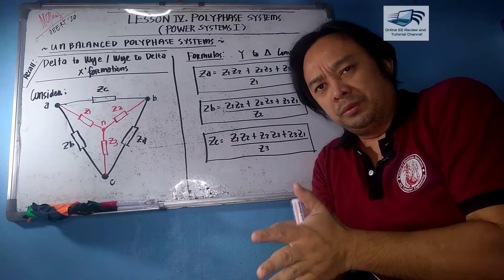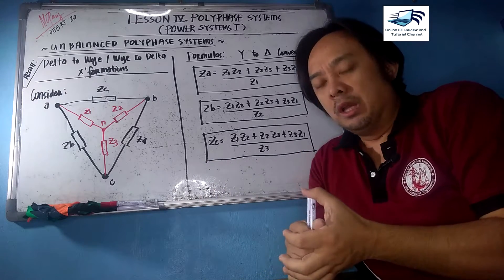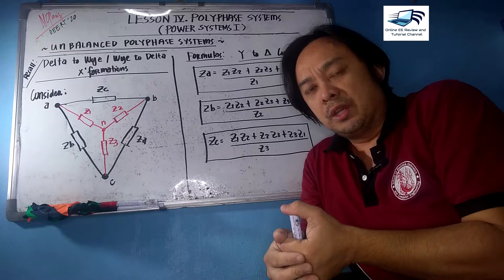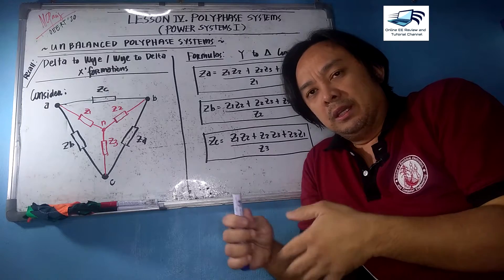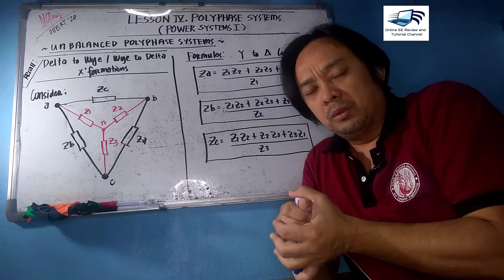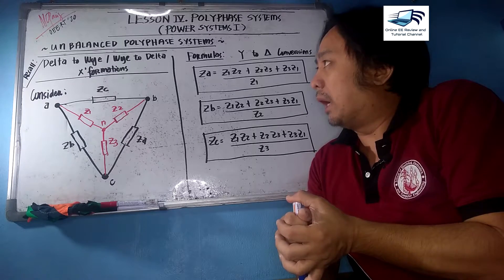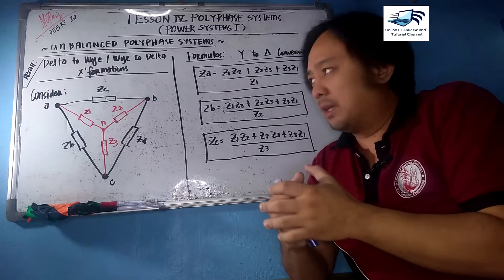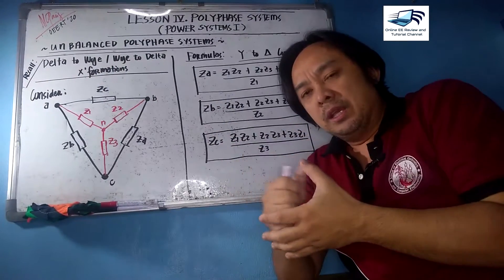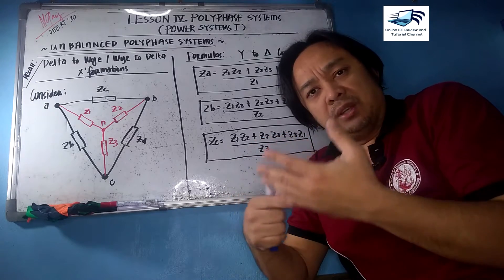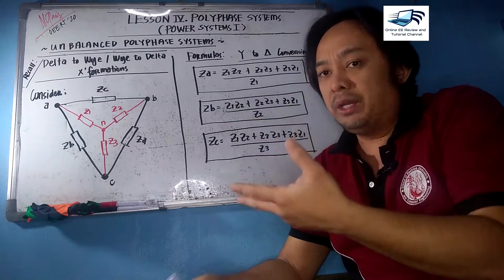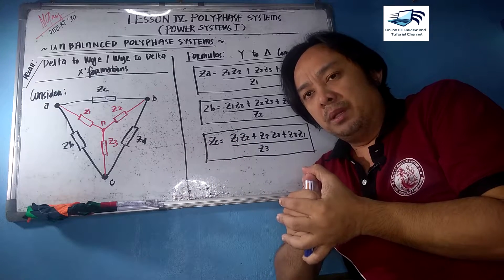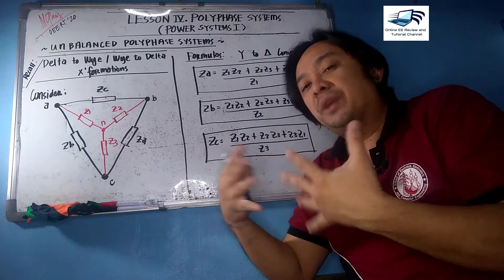Hello and good day. Today we have an important topic that was not mentioned in the last few lessons but will be covered comprehensively. We are under unbalanced polyphase systems in Lesson Number Four of Power Systems One. We need delta-to-Y and Y-to-delta transformations because on unbalanced systems we need to simplify certain connections to make calculations easier.